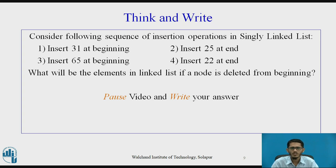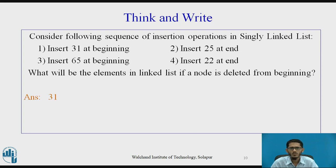Consider this sequence of insertion operations: insert 31 at the beginning, insert 25 at the end, insert 65 at the beginning, then insert 22 at the end. The question is: what will the linked list look like after deleting a node from the beginning? Students should pause the video and write the answer. The result is that 65 is deleted, leaving the linked list with elements 31, 25, and 22.